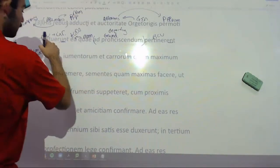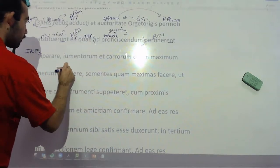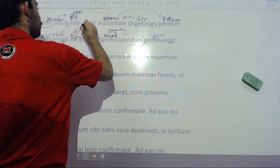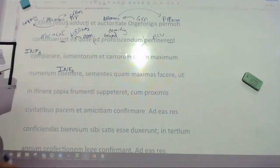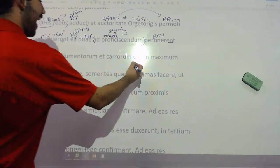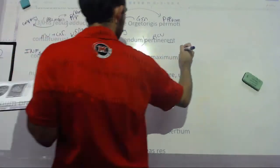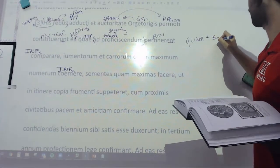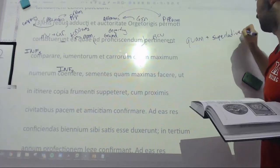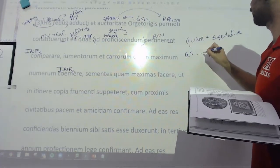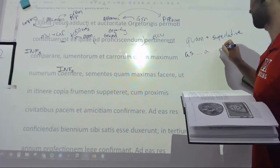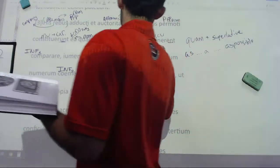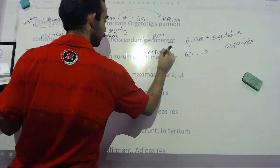Ad plus a gerund or gerundive is going to express purpose, for the purpose of departing. So they prepare those things which pertain to departing, and they decided to coemere, this is our infinitive number two, is with the infinitive. So prepare those things and to coemere, to buy up as great a number as possible. Quam plus a superlative like maximum, which is the biggest, is as blank a blank as possible. And this is as great a number, accusative direct object infinitive number two.